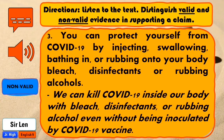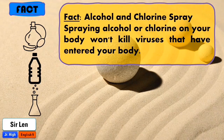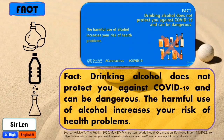Time is up. Thank you for answering. If your answer is non-valid, that's awesome. Spraying alcohol or chlorine on your body won't kill viruses that have entered your body. These substances can also harm your eyes, mouth, and clothes. When applied to surfaces, disinfectants can help kill germs such as the COVID-19 virus. However, don't use disinfectants on your body or inject them into your body or swallow them. Disinfectants can irritate the skin and can be toxic if swallowed or injected. Also, don't wash produce with disinfectants. Drinking alcohol does not protect you against COVID-19 and can be dangerous. The harmful use of alcohol increases your risk of health problems.